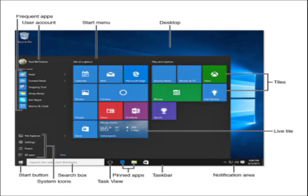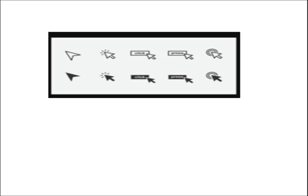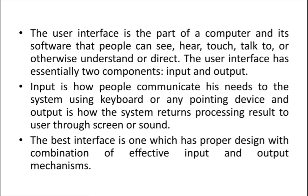While designing the interface, what type of input devices you are using — you need to consider that. And also, what type of output you are going to get in that interface — that also you need to consider. Input means how people communicate their needs to the system using a keyboard or any pointing device. Output is how the system returns the result to the user through the screen. Maybe your result may be displayed on the screen or through some audio. In different formats, you can receive the results.